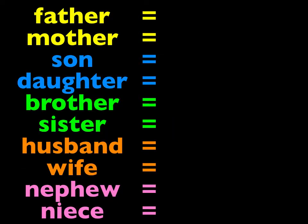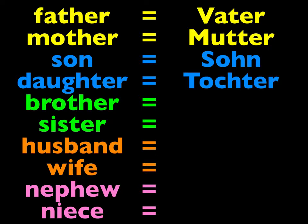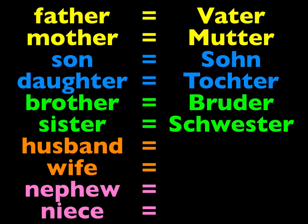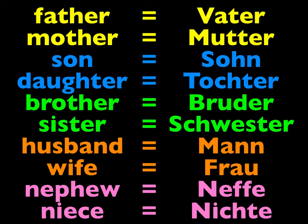Now let's repeat the family members we need for the last exercise today. Repeat: der Vater, die Mutter, der Sohn, die Tochter, der Bruder, die Schwester, der Mann, die Frau, der Neffe, die Nichte.